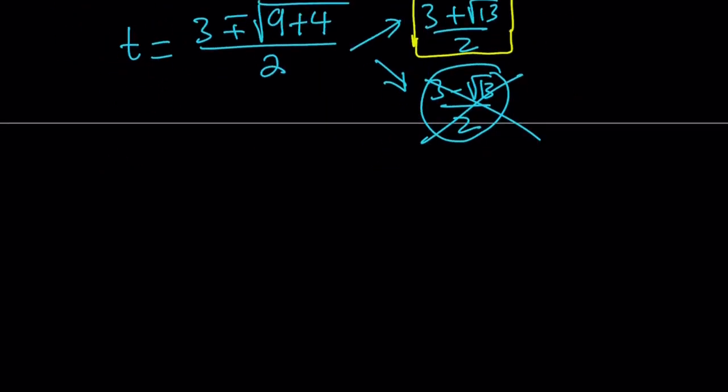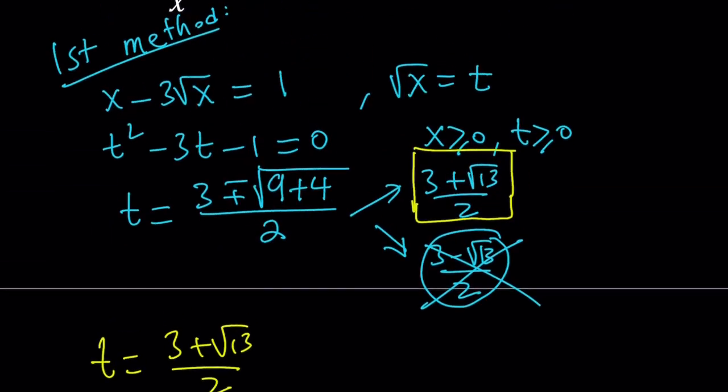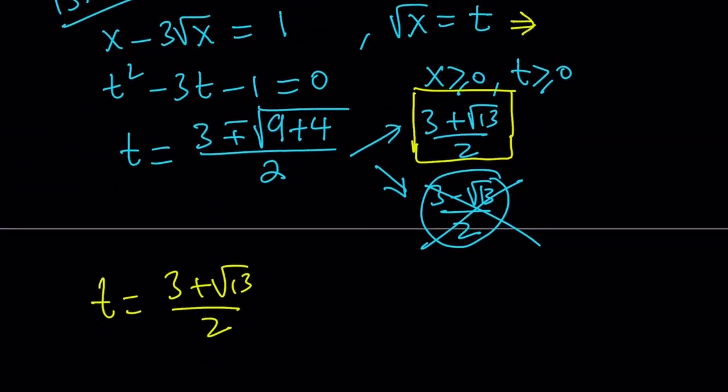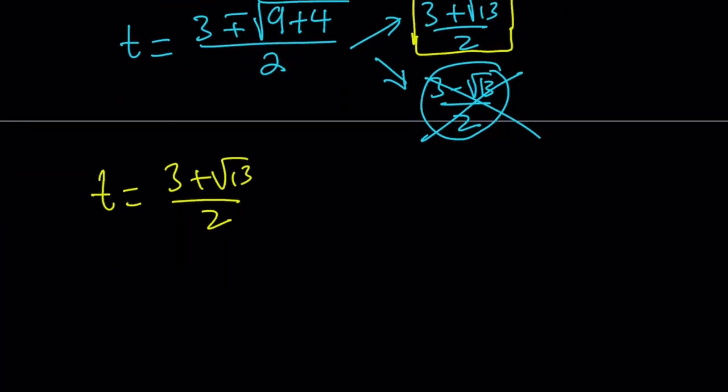Since we have the t value, t equals 3 plus root 13 over 2. And remember, x and t are related. We said that square root of x equals t. If x and t are both positive, then we can safely say that x equals t squared. Since we're looking for x, let's go ahead and square this radical expression, 3 plus root 13 over 2.